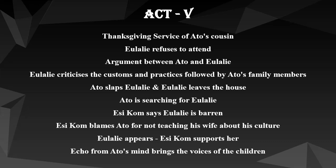Esicom says Eulalie refused because she is barren. Ato tells her they will have children when they want them and his wife is not barren. Esicom wonders whether they are gods who can create their own children. However, Esicom blames Ato for not teaching his wife about his culture, for as she believes, no stranger ever breaks the law. Eulalie then appears, looking very weak and unhappy. Esicom goes to support her, and after addressing Ato, supports Eulalie to the family house. Ato remains confused, bewildered, and lost — and an echo from his own mind brings the children's voices: 'Shall I go to Cape Coast? Shall I go to Elmina? I can't tell.'